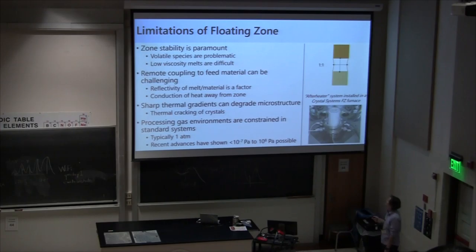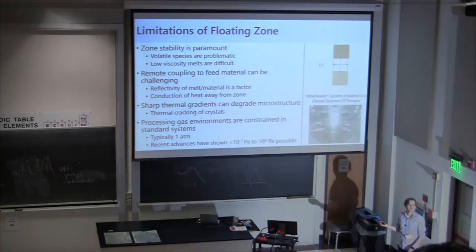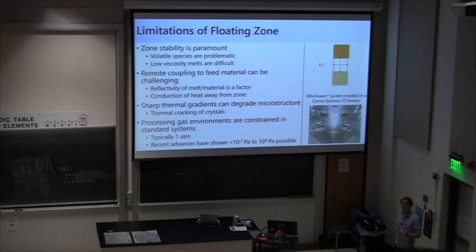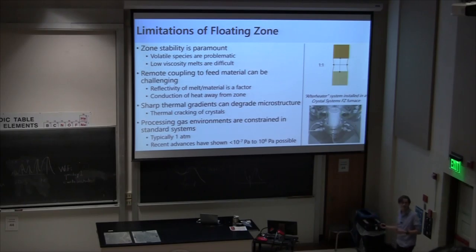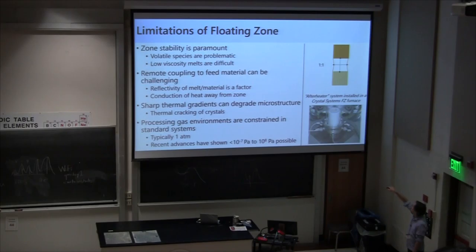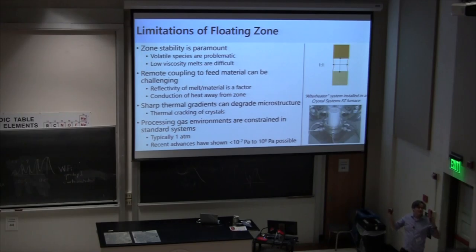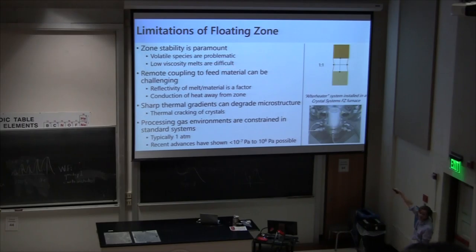No technique is a cure-all. There are limitations of floating zone. As Brian mentioned, it takes a while — it's a lot of preparation work. It's really something you want to think about doing for very targeted crystal growth; you have a system that's exciting and you really want to perfect the material. It's not the fastest way if you're just doing a lot of exploratory synthesis. Another limitation is zone stability — you melt a system and have to be able to maintain a stable molten zone. A good rule of thumb is you want the aspect ratio to be something like one to one; if it's too stretched, it'll collapse. Surface tension is really what allows the technique to work.